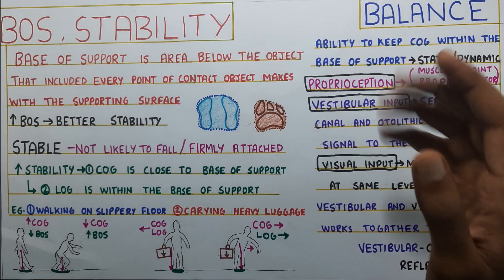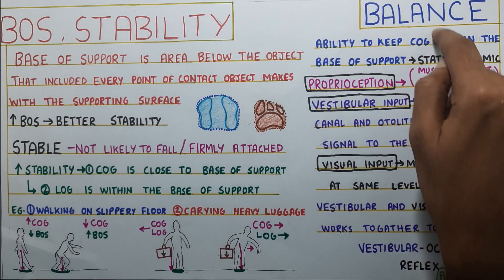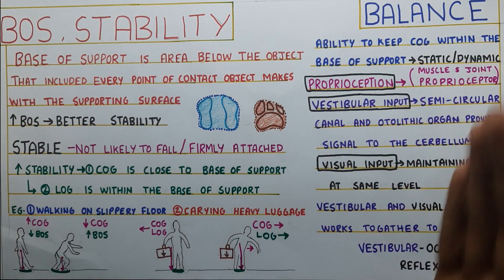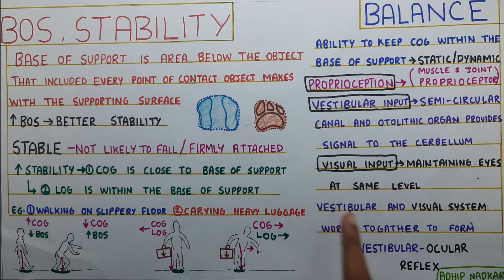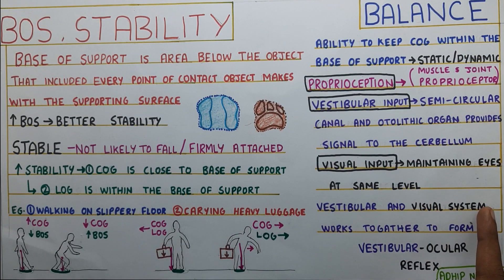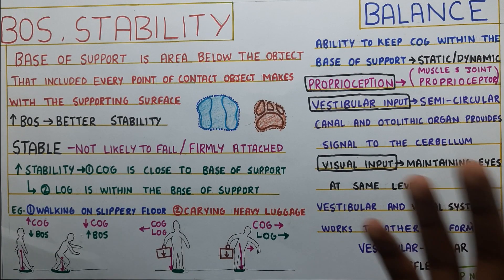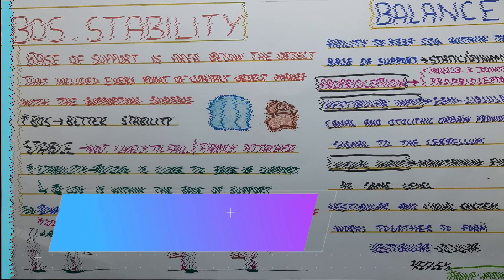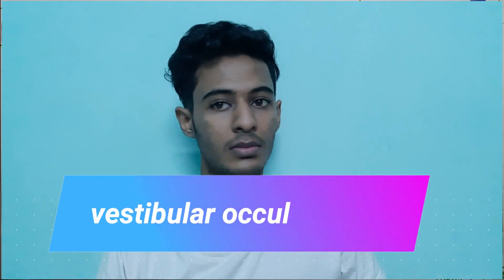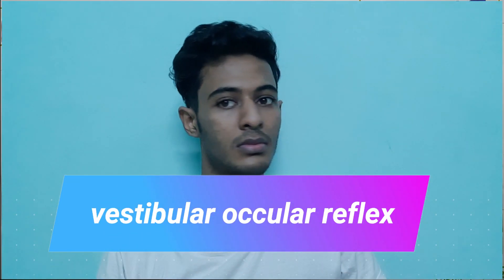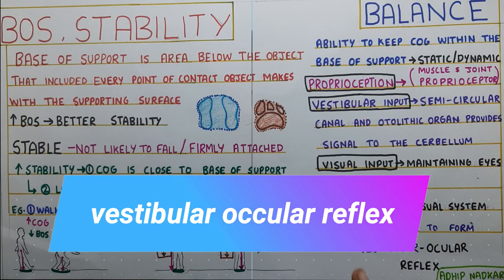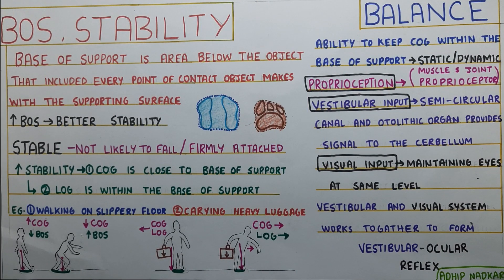One last point: the vestibular and visual systems work together and create something called the vestibulo-ocular reflex. This is the ability that when you are turning your head, you can still keep your eyes fixed on one position. This reflex is called the vestibulo-ocular reflex.